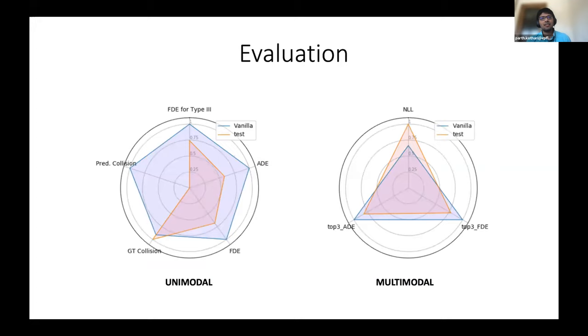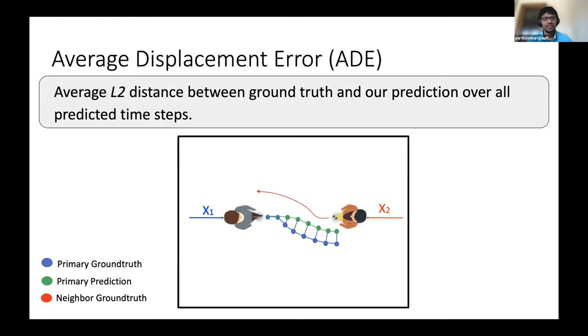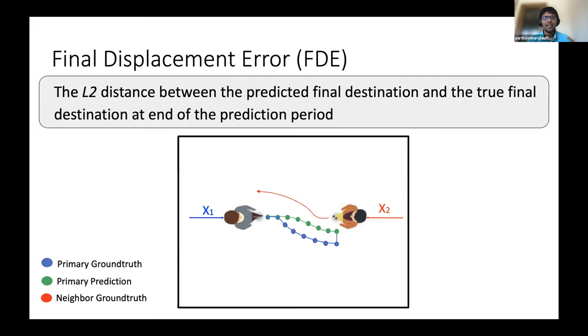And for evaluation, we have an extensive evaluation framework comprising of a wide range of unimodal metrics. I'll talk about it in the next slide, as well as multimodal metrics. So I'll quickly go over the evaluation metrics which we have. So let's call the trajectory we are evaluating as the primary trajectory. Then the ground truth of this trajectory is shown in blue, the prediction given out by the model is shown in green. So there are two standard evaluation metrics: one is the average displacement error, and another is the final displacement error, which are largely used in this field.